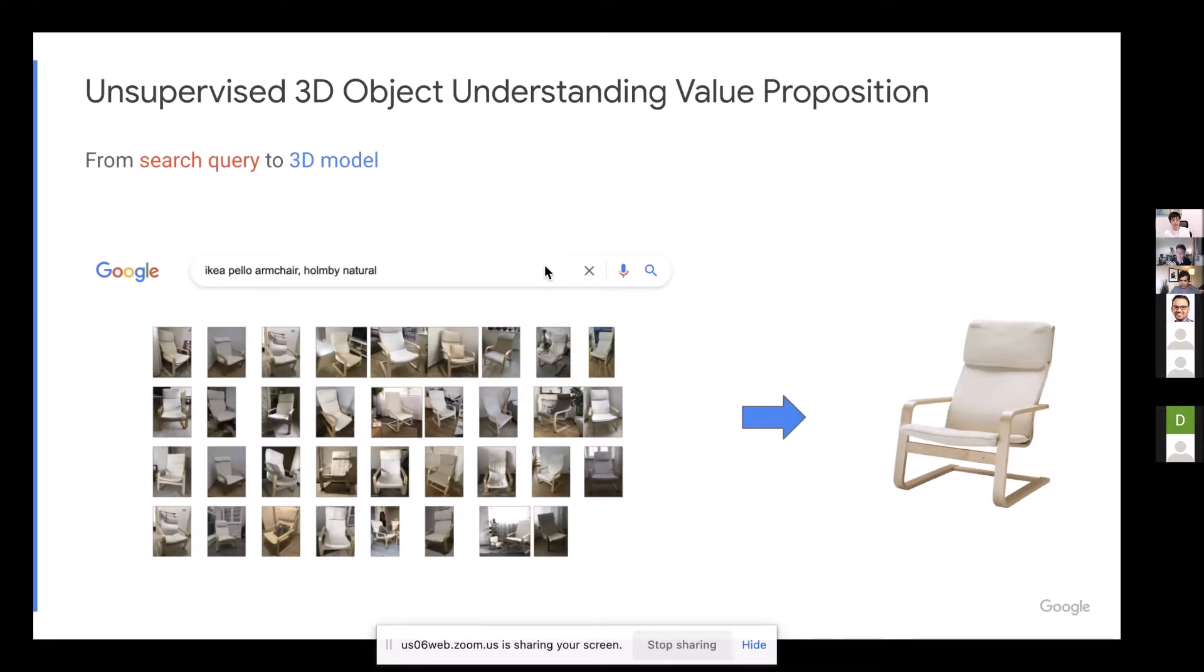So when we have all of these images and all of them are from multiple views, it becomes very natural to start thinking about, can we build like a 3D model out of this search query? And this would help us with a lot of the problems that we wish to solve, including the pose estimation, what are the sizes, can we have different views of the same object and so on. So from this perspective, unsupervised 3D object understanding is very valuable to our products and our goal.